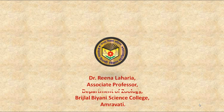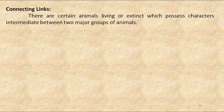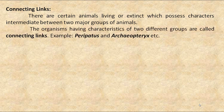Hello friends. Today we are going to see Archaeopteryx as an example of connecting link. First, let us see what connecting links are. There are certain animals, living or extinct, which possess characters intermediate between two major groups of animals. Organisms having characteristics of two different groups are called connecting links, for example Peripatus and Archaeopteryx.